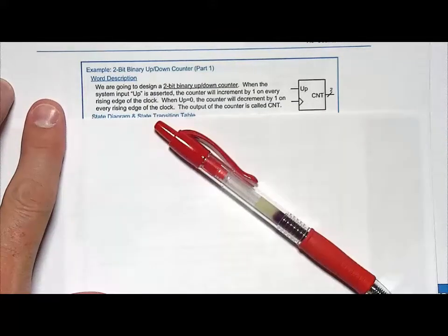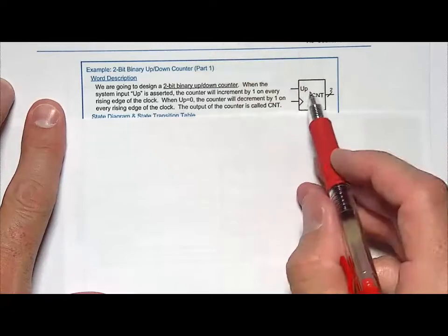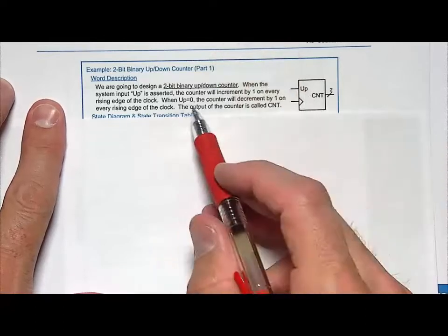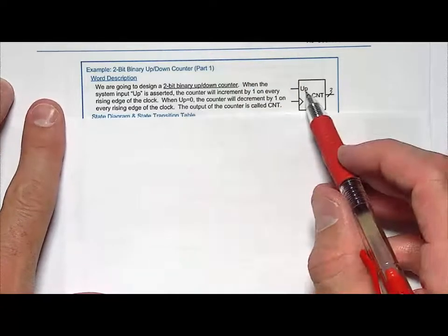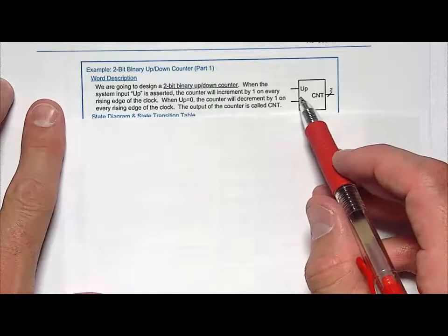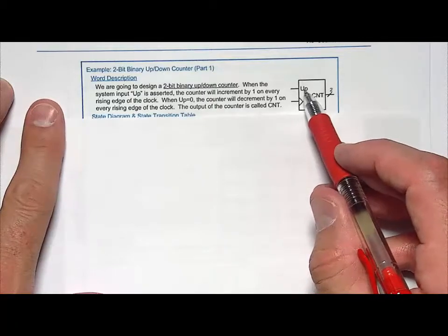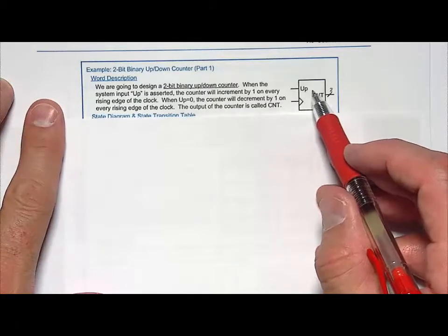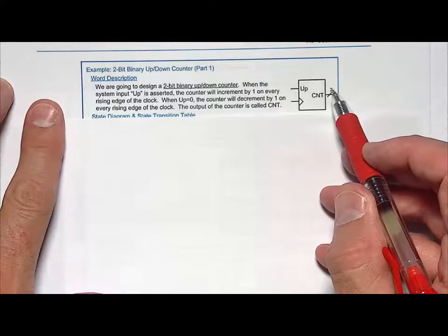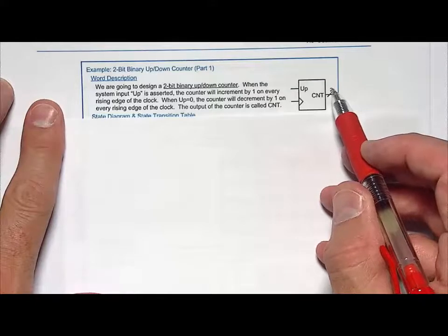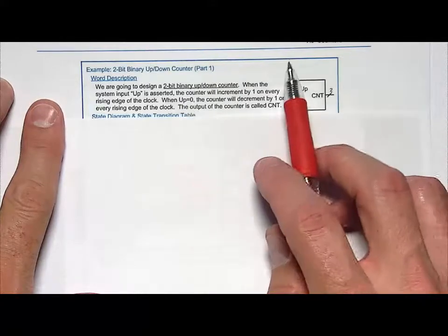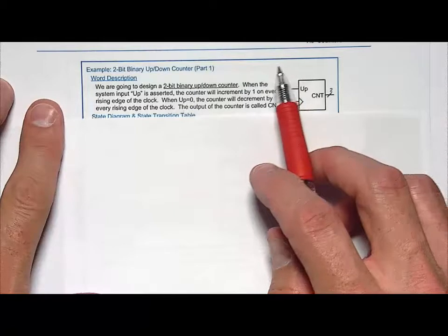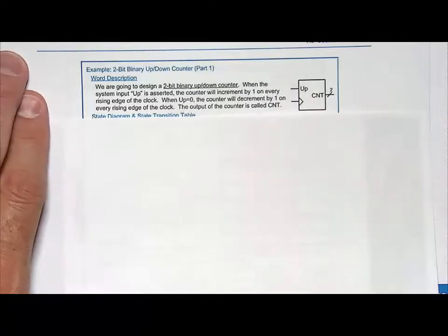We're going to have an input called 'up.' When up is one, it will increment upward — so we'll go 00, 01, 10, 11, and then roll over. But when up is zero, it'll count down. That's the challenge we have.